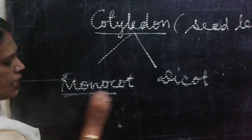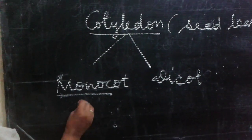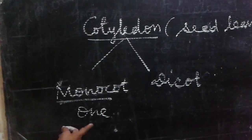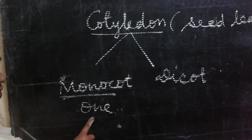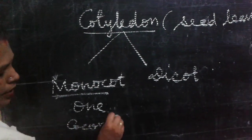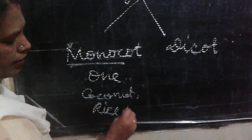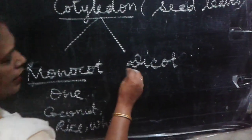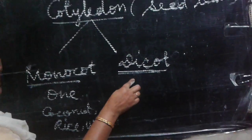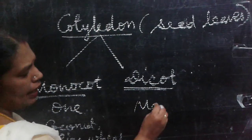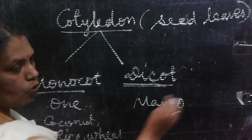Mono means single — it means the seed has only one cotyledon. You can see this in coconut, rice, and wheat — those are monocots. Then dicot means the seed contains two cotyledons. For example, mango — it contains two cotyledons.